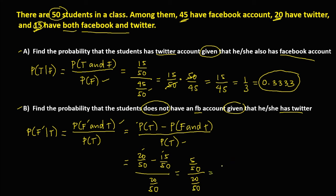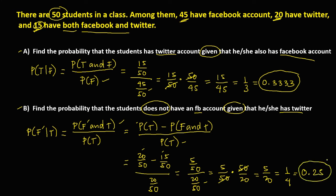So we have 5 over 50 over 20 over 50. To simplify, 5 over 50 times the reciprocal of 20 over 50, which is 50 over 20. Cancel the 50s, giving us 5 over 20, which equals 1 over 4, or in decimal, 0.25. So this is the probability.